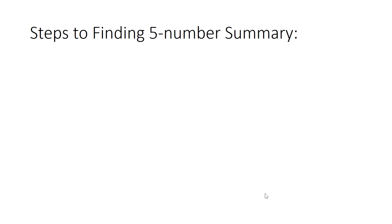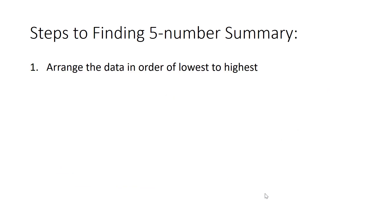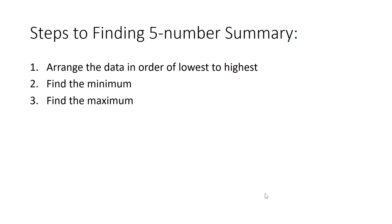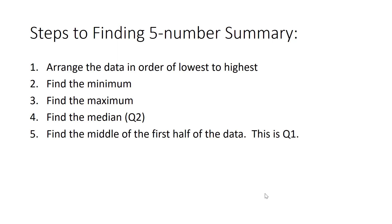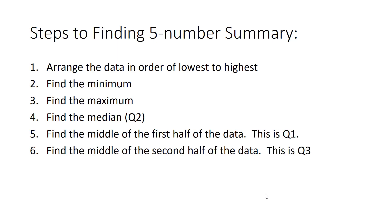Here are the steps to finding a five-number summary. First, arrange the data in order from lowest to highest. Then identify the minimum and maximum. Next, find the median (Q2), then find the middle of the first half of the data, which we call Q1, and then find the middle of the second half of the data, which we call Q3.